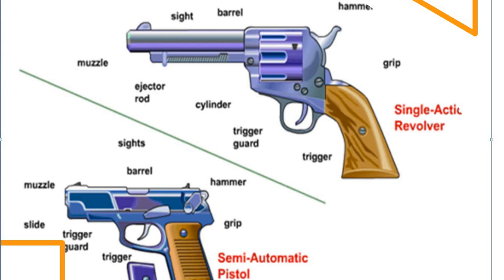To revise the concepts discussed in this lecture: ballistics is the science of projectile motion and the term came from a Greek word 'ballein' which means to throw. Forensic ballistics is the science which deals with the investigation of firearms, ammunition, and the problems arising from their use. Ballistics has been subdivided into three parts: internal ballistics, external ballistics, and terminal ballistics.